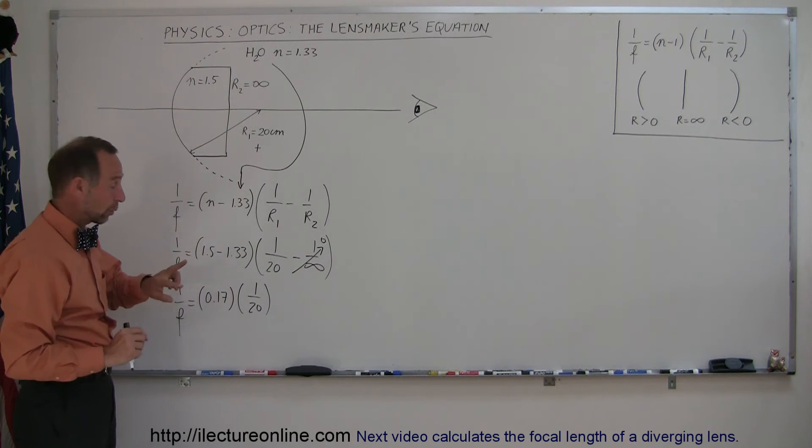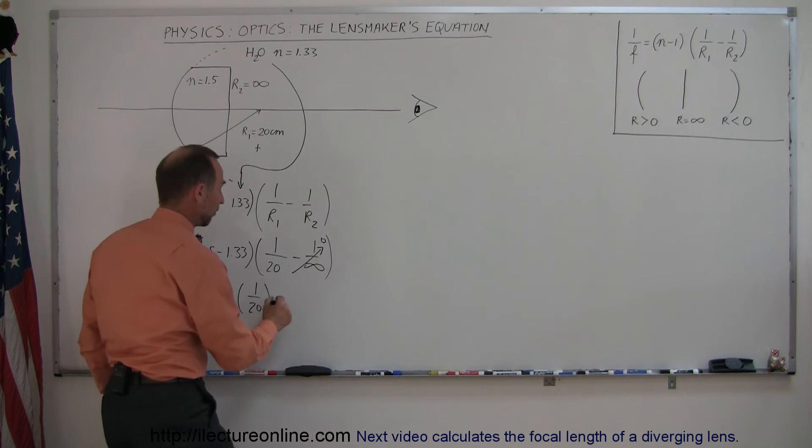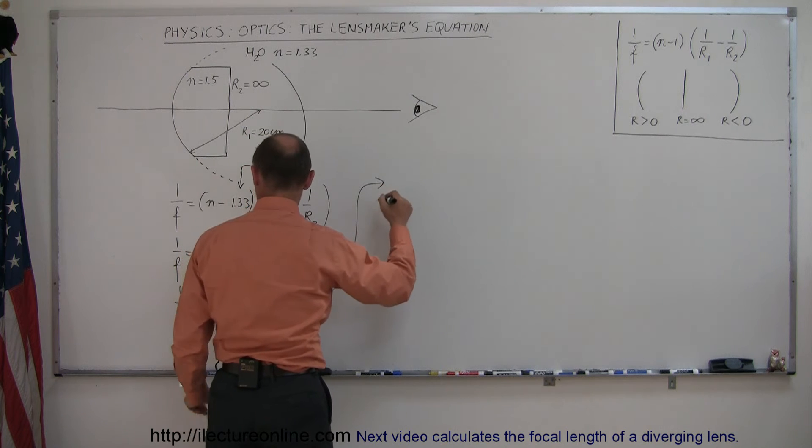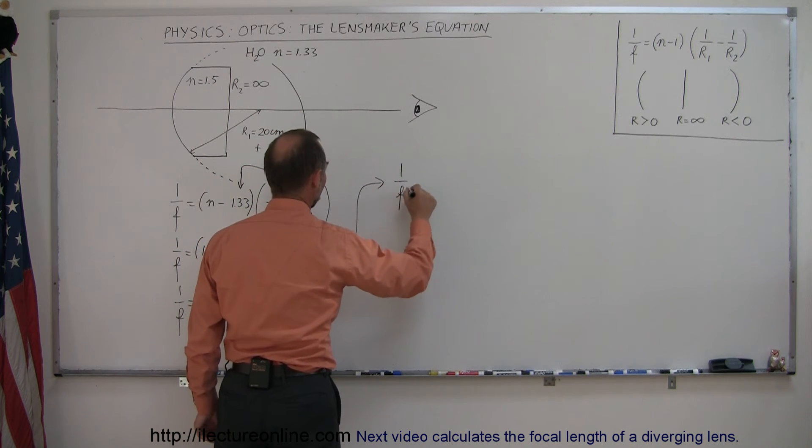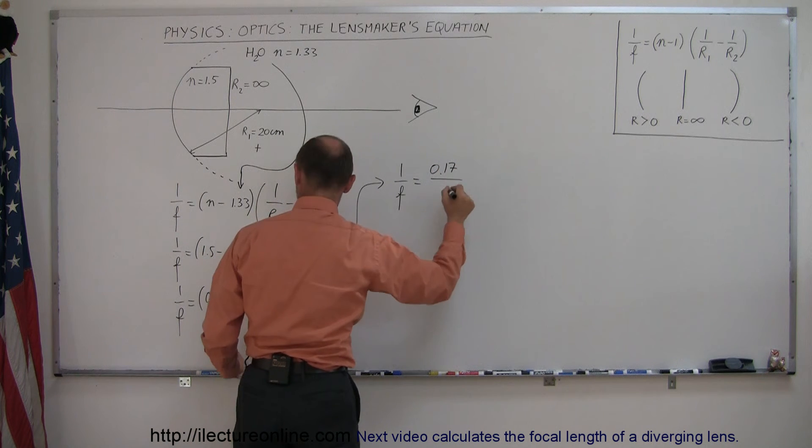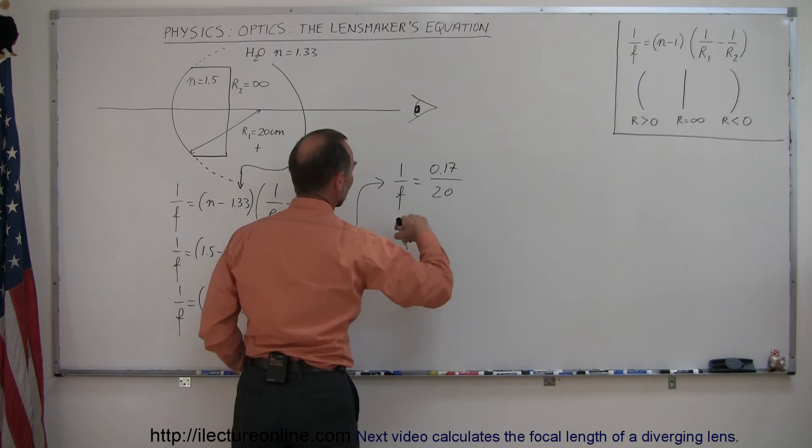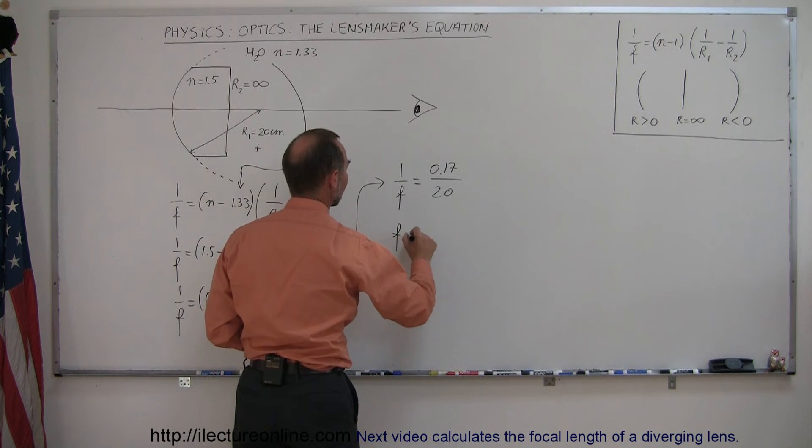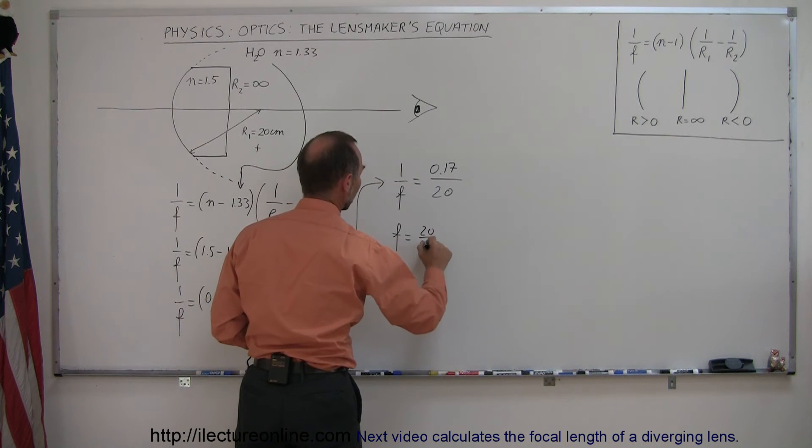If we turn the equation around because we're looking for f, first let me multiply this together. 1 over f is 0.17 over 20. When we turn that around, f equals 20 over 0.17.